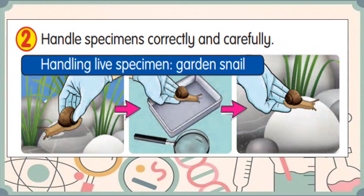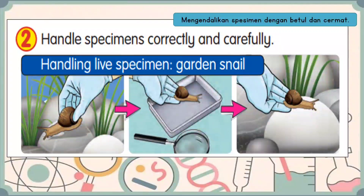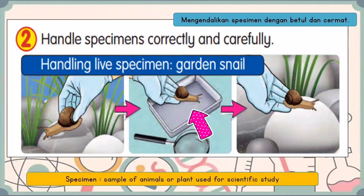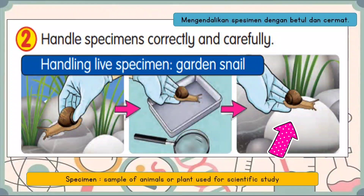The second manipulative skill is to handle specimens correctly and carefully. Mengendalikan spesimen dengan betul dan cermat. Specimen means samples of animals or plants used for scientific study. The correct way to handle a specimen is to wear gloves when collecting it. Gunakan sarung tangan apabila mengutip spesimen. Then the specimen is put on a tray. Kemudian letakkan spesimen ke dalam talam. After the investigation is carried out, put back the specimen to the place of origin where we collected it. Selepas selesai penyiasatan, letak kembali spesimen di tempat asalnya.